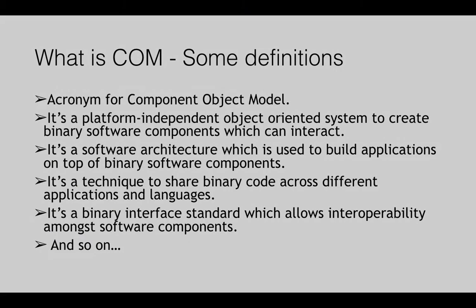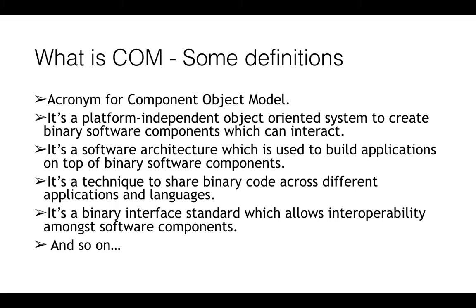COM is basically an acronym for Component Object Model. It's a platform-independent, object-oriented system to create binary software components which can interact with each other. It's a software architecture used to build applications on top of binary software components. It is also a technique to share binary code across different applications and languages, and a binary interface standard which allows interoperability amongst software components.